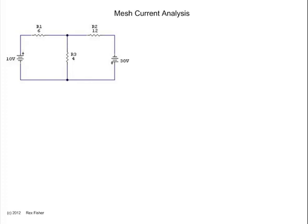Here's a circuit with two batteries and three resistors. Let's find the voltage across and the current through R3. So there's the voltage, and there's the current.